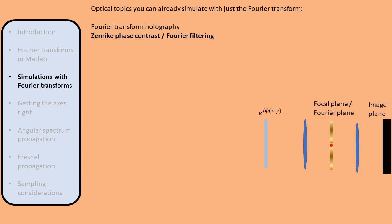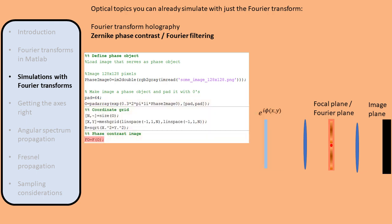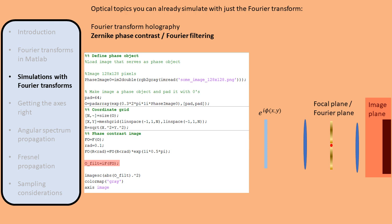Another topic we can simulate is Zernike phase contrast imaging, or more generally, imaging with Fourier filtering. We define a phase object that we want to image. To make the phase information visible in the image intensity, we apply Fourier filtering: first take the Fourier transform of the phase object, then shift the phase of the center of the Fourier transform — corresponding to unscattered light — and take another Fourier transform to create the image. In Fourier filtering we use Fourier transforms to simulate the effects of lenses in an imaging system, whereas in Fourier transform holography we use them to simulate far-field propagation.